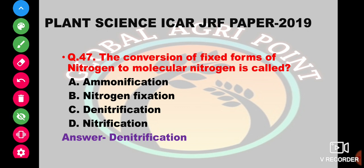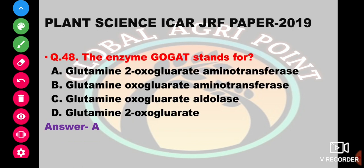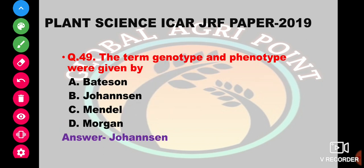The enzyme GOGAT stands for glutamine 2-oxoglutarate aminotransferase. The answer is glutamine 2-oxoglutarate aminotransferase. The terms phenotype and genotype were given by Bateson, John Johnson, Mendel, or Morgan. The answer is Johnson.